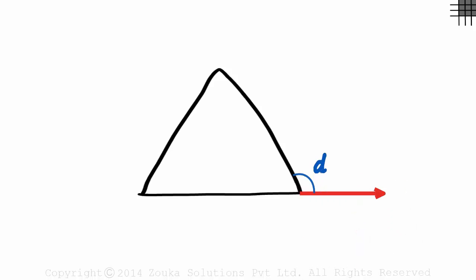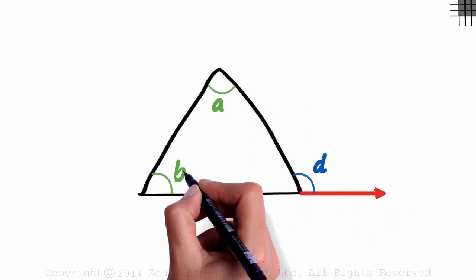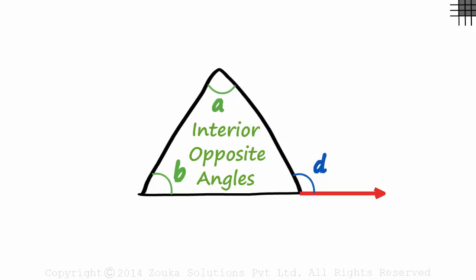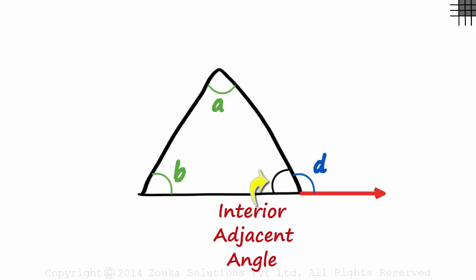Let's call it D. In this case, angle A and angle B will be its interior opposite angles. And this angle will be its interior adjacent angle.